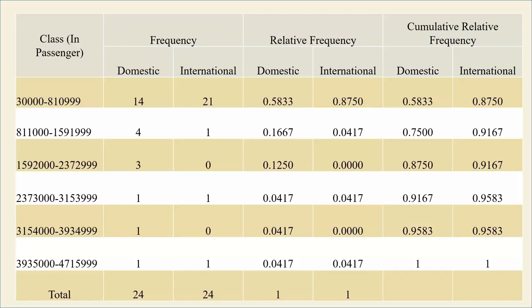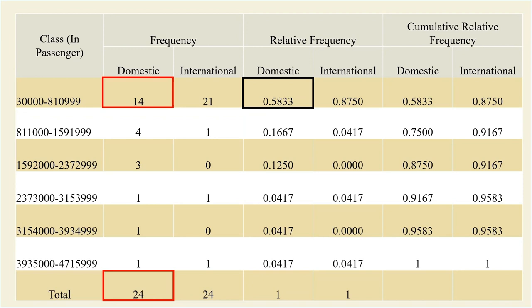Here is the chart that was constructed. To find the relative frequencies, divide each frequency by the total number of passengers in the sample. Relative frequency can be written as a fraction, percent, or decimal.